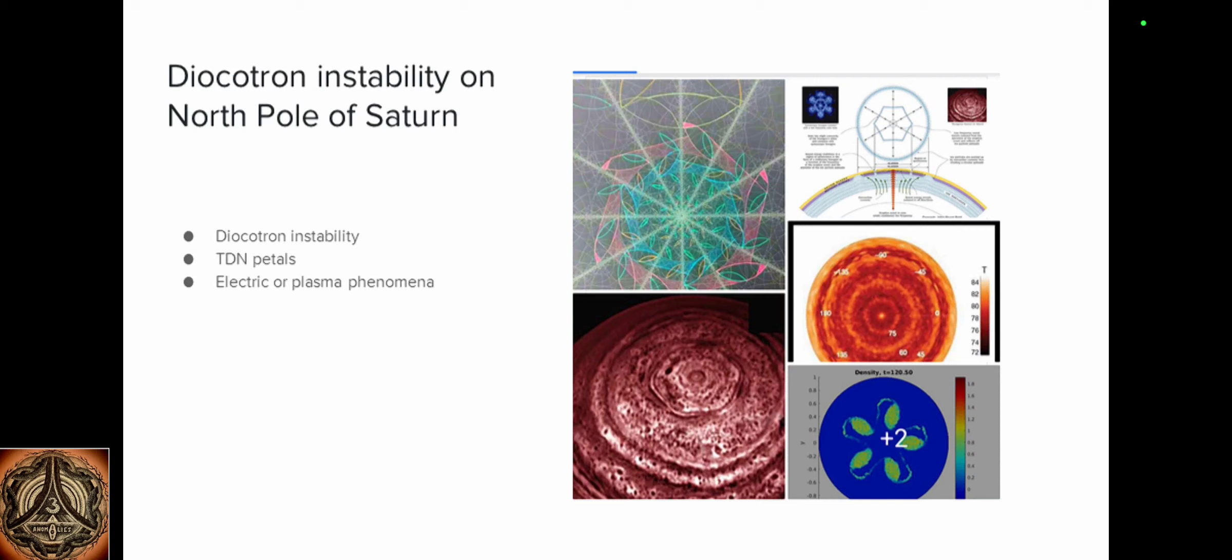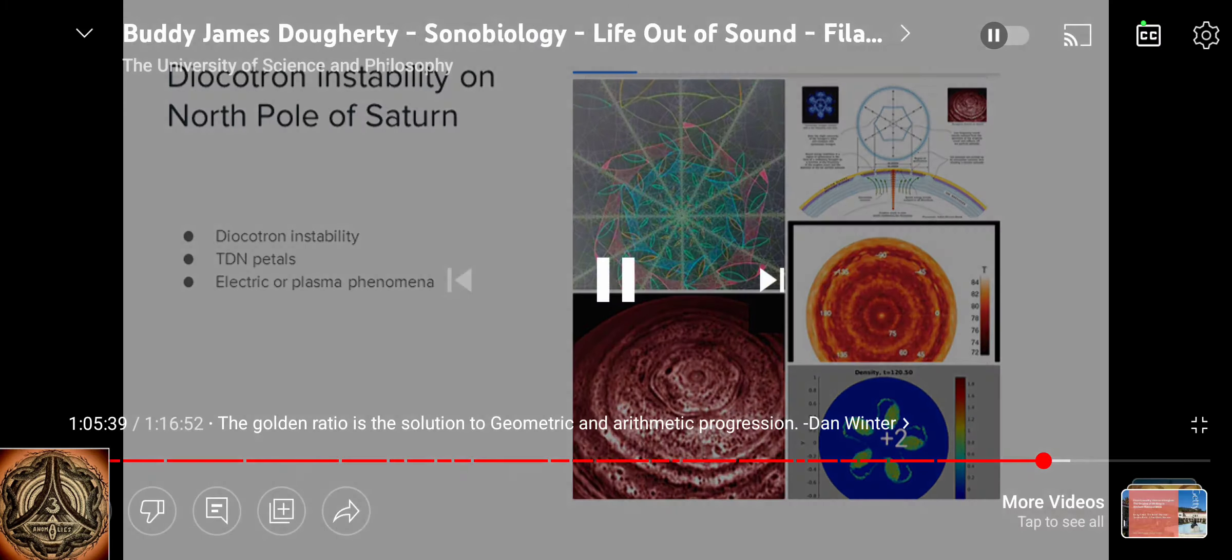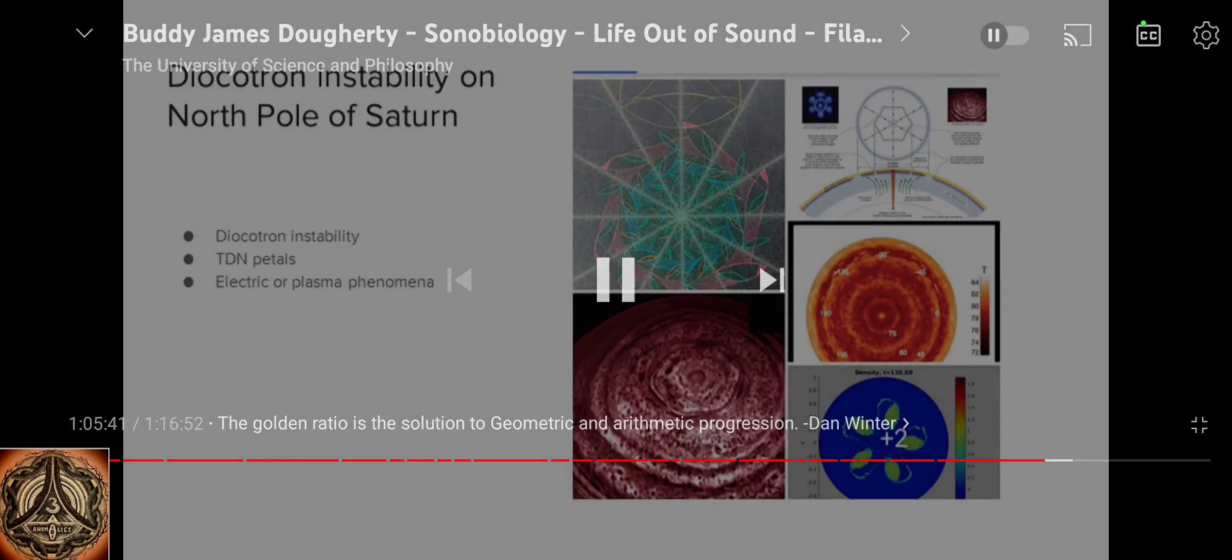This is how we knew that it's a Birkland current at the top of the poles of Saturn because you have counter-rotations observable at the top of the planet.